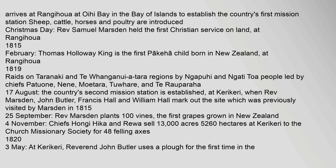25 September: Rev. Marsden plants 100 vines — the first grapes grown in New Zealand. 4 November: Chiefs Hongi Hika and Rua sell 13,000 acres (5,260 hectares) at Karikari to the Church Missionary Society for 48 felling axes.